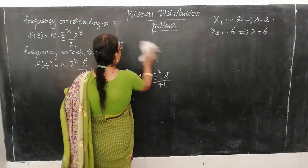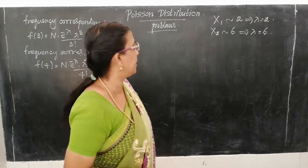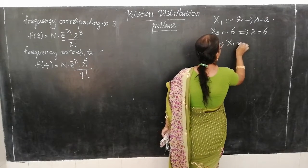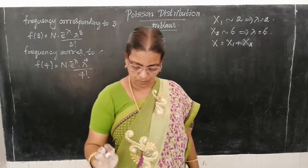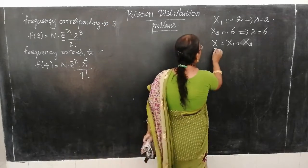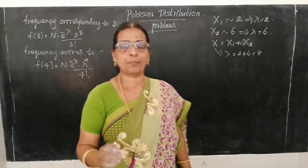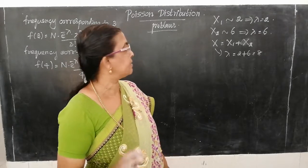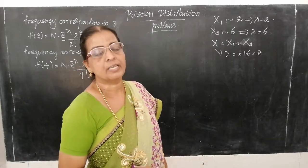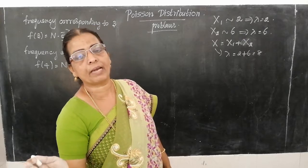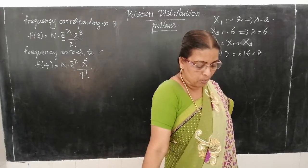Since X₁ and X₂ are independent random variables, we define X = X₁ + X₂. For X₁, lambda is 2, and for X₂, lambda is 6. Then for the combined random variable X, lambda = 2 + 6 = 8. Now we calculate the probability of more than 5 calls.